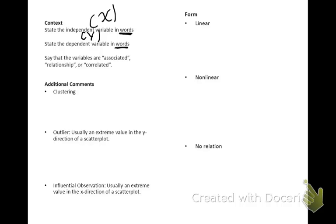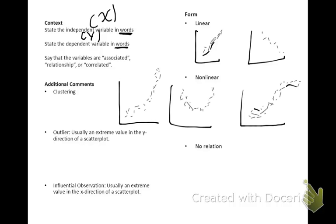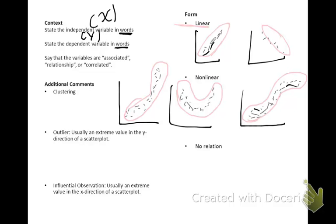The form of a scatter plot can be linear — with a positive slope or a negative slope. It can also be non-linear, with shapes such as exponential, parabolic, or logistic curves. In this class, we'll mainly be saying whether it's linear or not linear. The last case is no relation, which looks like a very weak or no association — as x increases, you cannot tell whether y will increase or decrease.